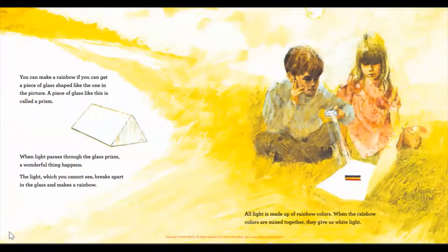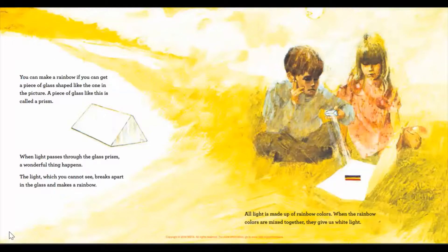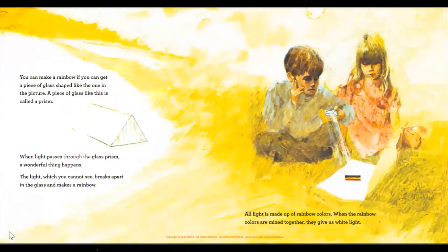You can make a rainbow if you can get a piece of glass shaped like the one in the picture. A piece of glass like this is called a prism. When light passes through the glass prism, a wonderful thing happens — the light breaks apart in the glass and makes a rainbow. All light is made up of rainbow colors. When the rainbow colors are mixed together, they give us white light.